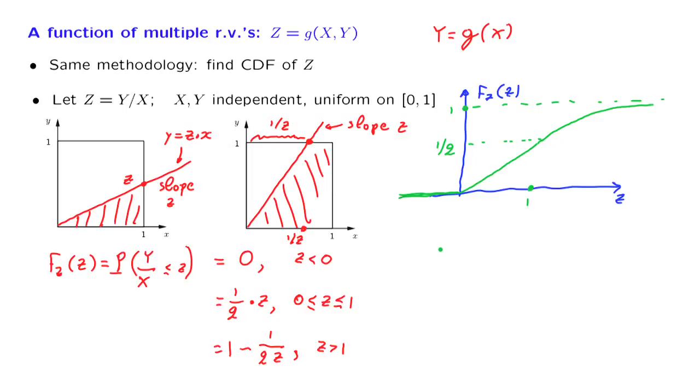The next step, the final step, is to differentiate the CDF and obtain the PDF. In this region, the CDF is constant, so its derivative is going to be equal to 0. So in this region, the CDF is linear, so its derivative is equal to this factor of 1 half. So the PDF is equal to 1 half for z's between 0 and 1.